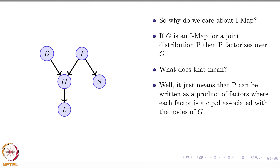Remember, a Bayesian network is not just nodes and edges — there is also a conditional probability distribution associated with each node. Once we have those conditional and marginal tables, we know the joint distribution factorizes over them. There could be many IMAPs for a given distribution, each with the property that I(G) ⊆ I(P), and for any such IMAP you can boldly write the joint distribution as a factorization of the conditional and marginal distributions.